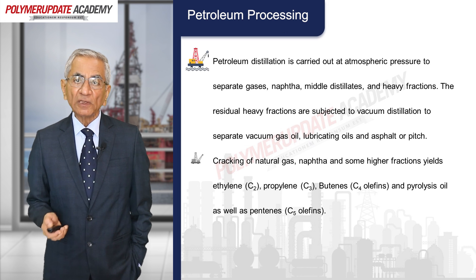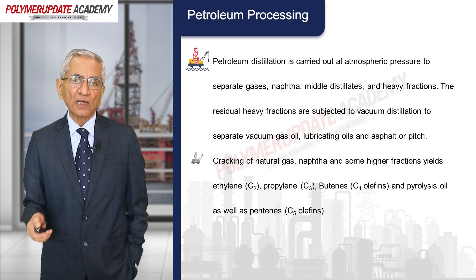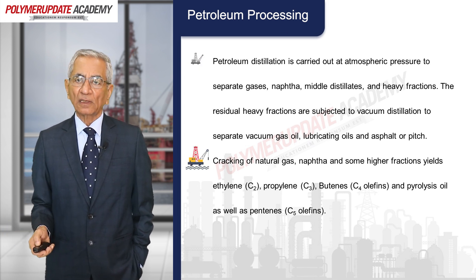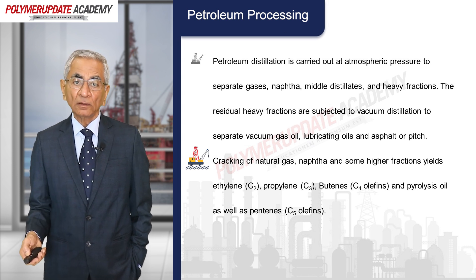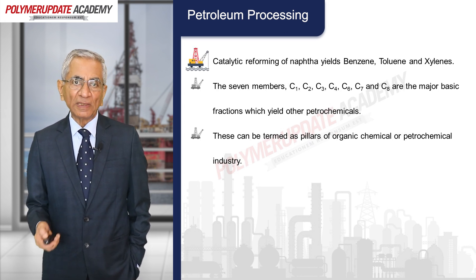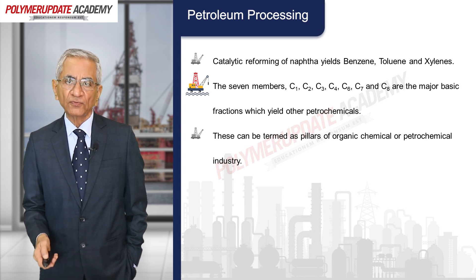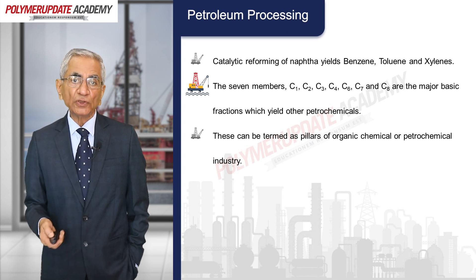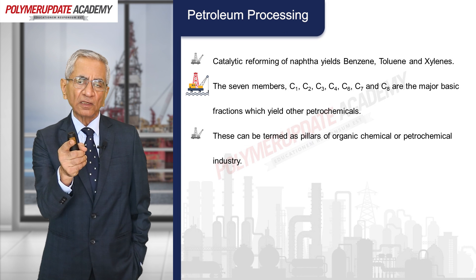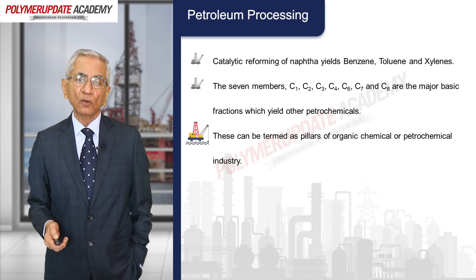Petroleum distillation at atmospheric pressure separates gases, naphtha, middle distillates, and heavy fractions. Residual heavy fractions are subjected to vacuum distillation to separate vacuum gas oil, lubricating oils, and asphalt or pitch. Cracking of natural gas, naphtha, and some higher fractions yields ethylene, propylene, butenes, pyrolysis oil, and pentenes. Catalytic reforming of naphtha yields benzene, toluene, and xylene. The seven major basic fractions — C1, C2, C3, C4, C6, C7, and C8 — are the pillars of the organic chemical and petrochemical industry.